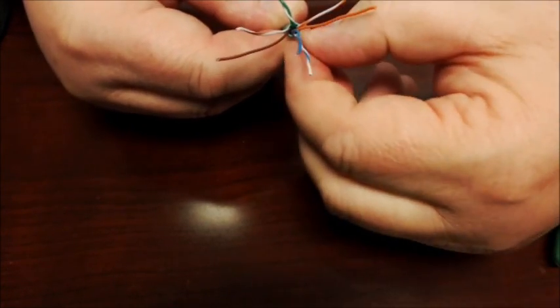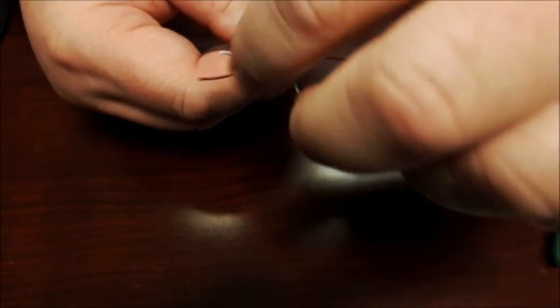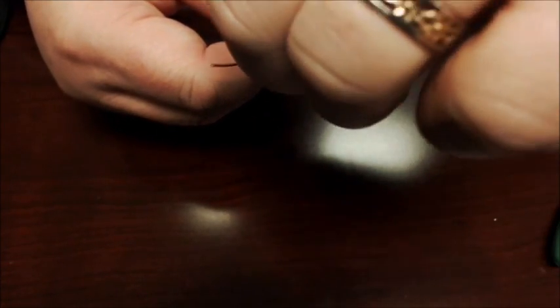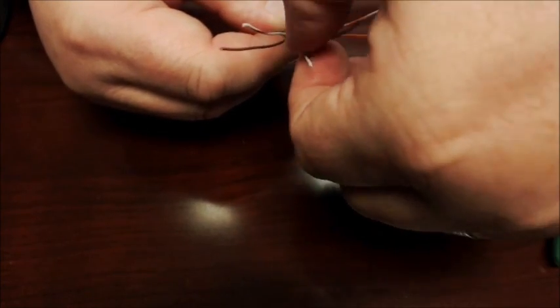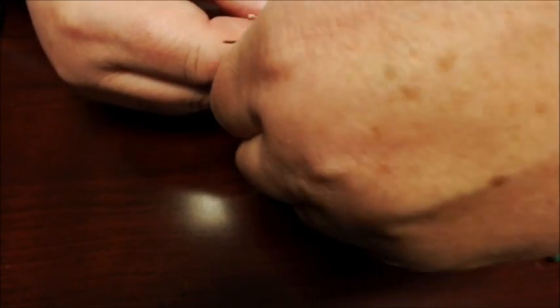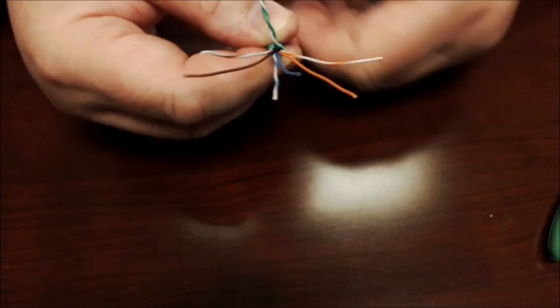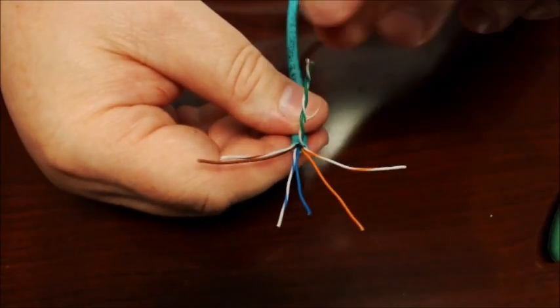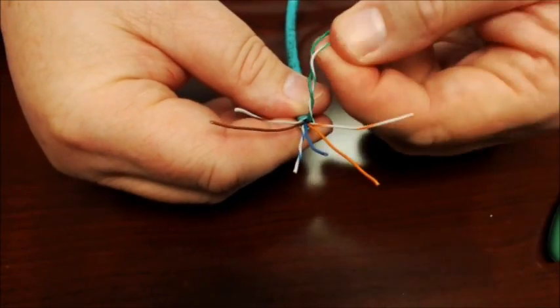Now all of these colors are going to be side by side. In other words, the orange white will be next to the orange, the blue white will be next to the blue, the brown white will be next to the brown.